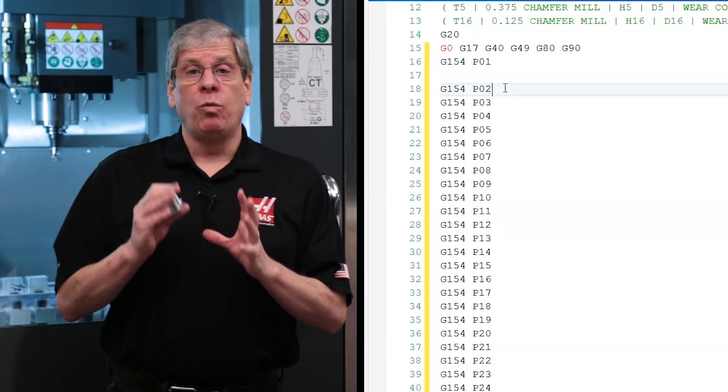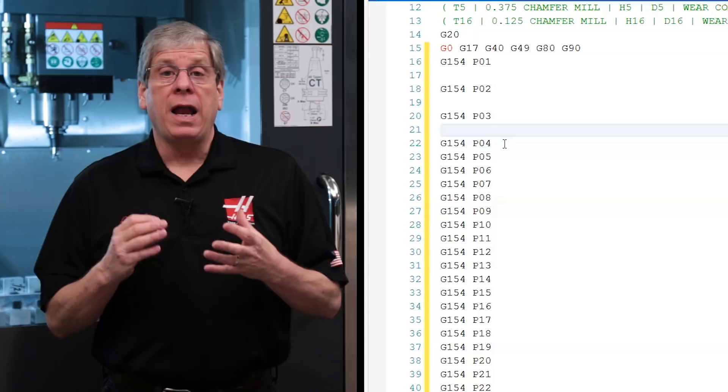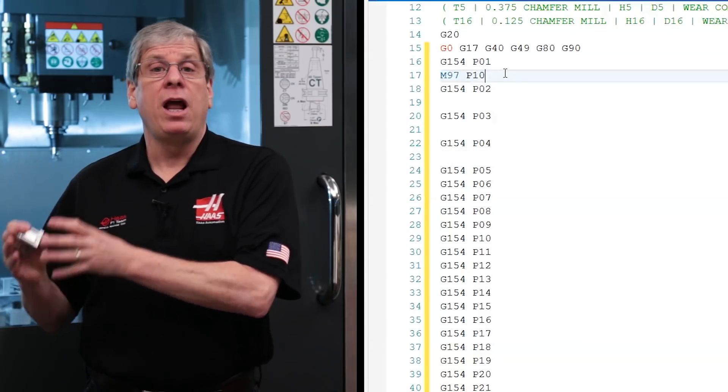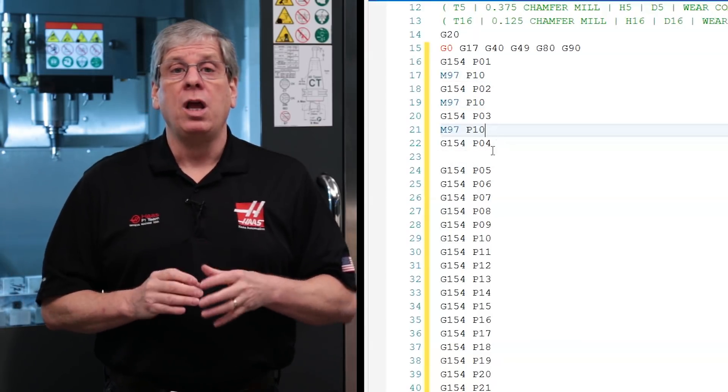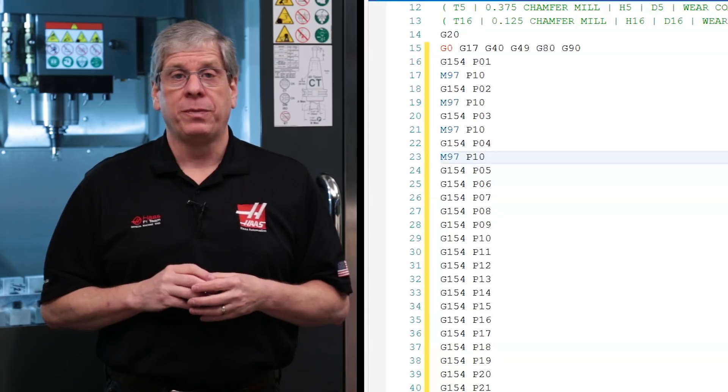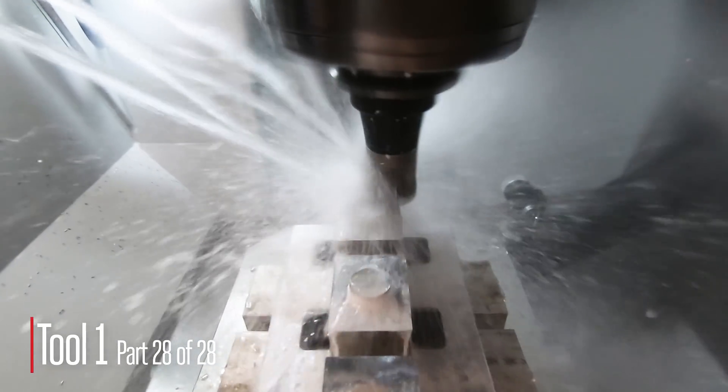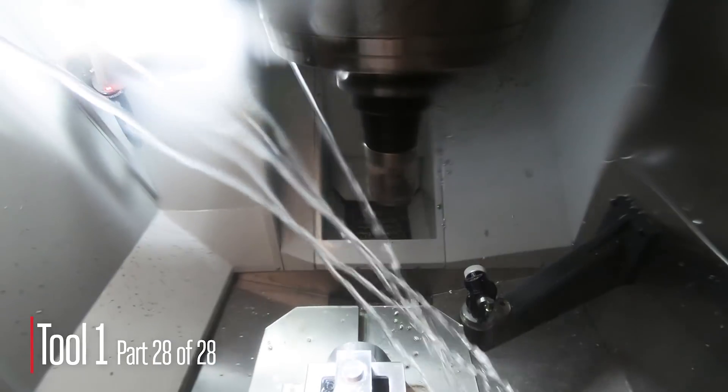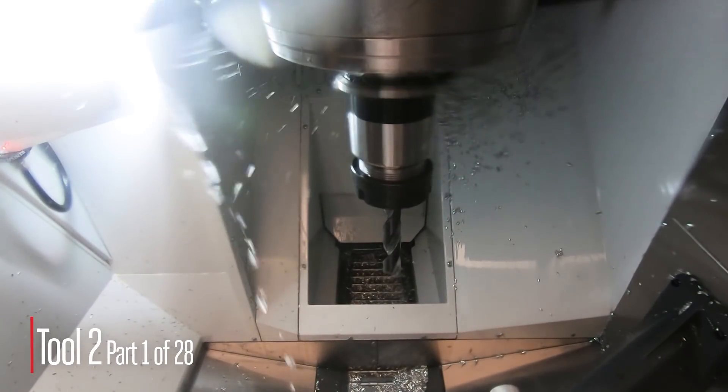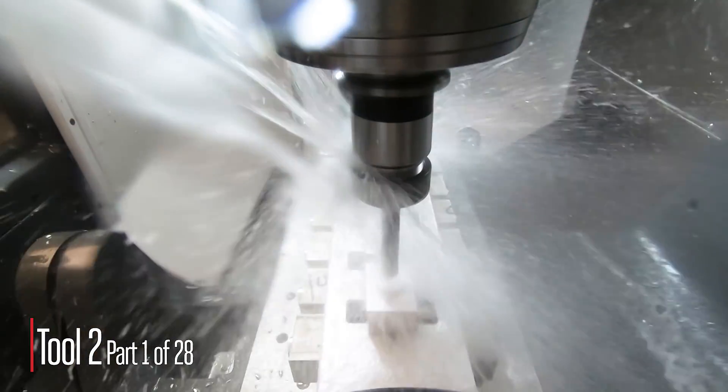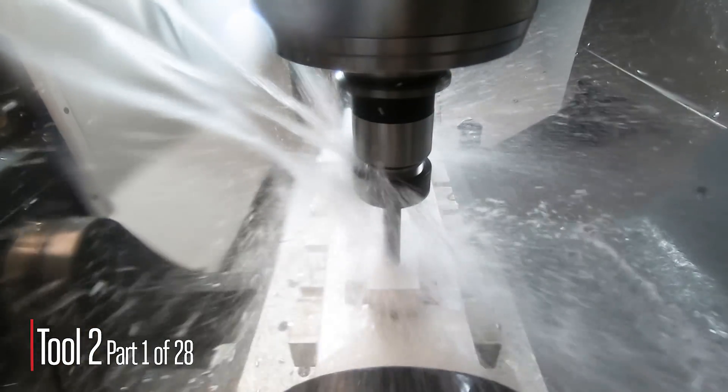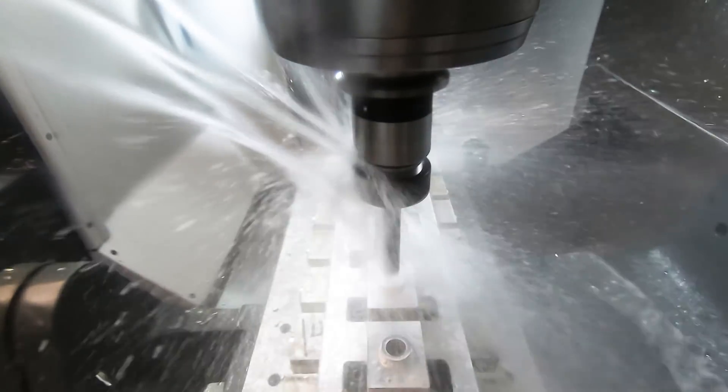We'll use a different work offset for each part and then use an M97 local subprogram call to repeat the subroutines. I run the first tool operation subroutine 28 times once on each work offset and then come back to the first work offset for the second tool operation subroutine and repeat it 28 times and so on.